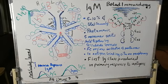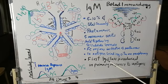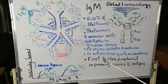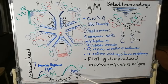IgM is the first immunoglobulin class produced in the primary immune response to antigen, as can be seen here. However, during the secondary immune response, IgM declines and IgG antibodies rise.